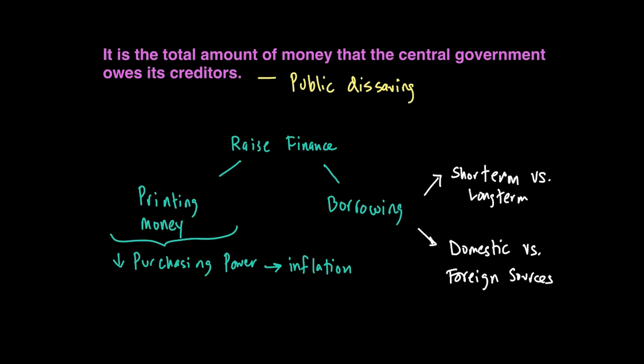Nonetheless, when the government borrows money, they will increase the size of the national debt, and it may not be problematic unless the government does not have the means to repay this debt. Sometimes countries, especially developing countries, who are unable to pay their national debt may declare bankruptcy or ask for relief from agencies like the IMF and World Bank. So one of the roles of government is to make sure they do not run into a continuous budget deficit, because that leads to borrowing and the accumulation of national debt, which has its own challenges.